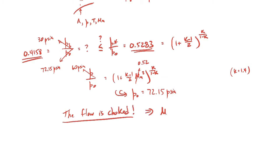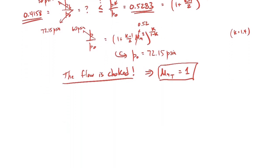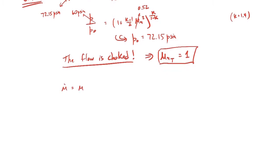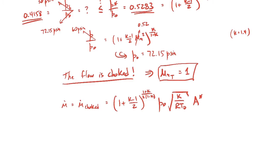Since the flow is choked, the Mach number at the throat must equal one — that answers the first question. For the second question, the mass flow rate, we'll use the choked flow mass flow rate expression. It's given on the formula sheet and involves the specific heat ratio k, the stagnation pressure, the stagnation temperature, and the sonic area. We know k and P₀, so we still need the stagnation temperature and the sonic area.